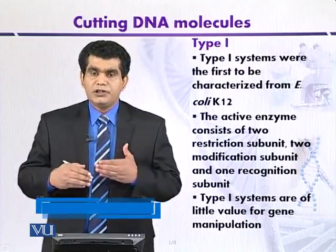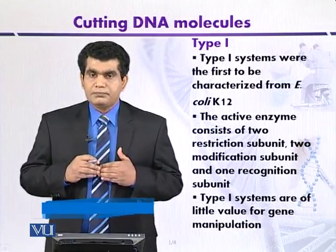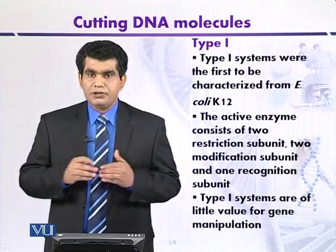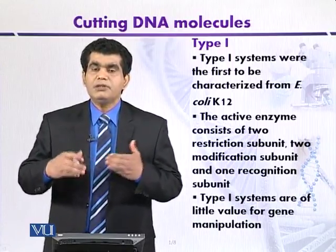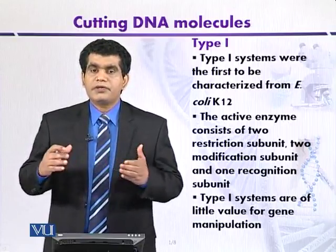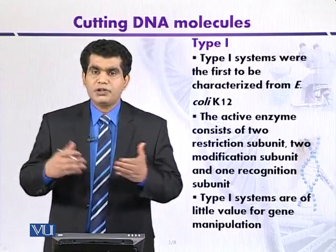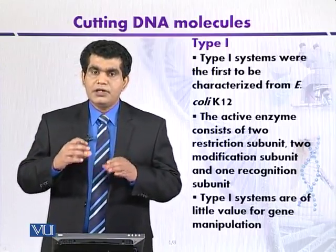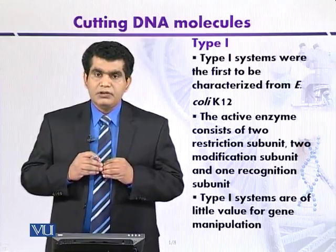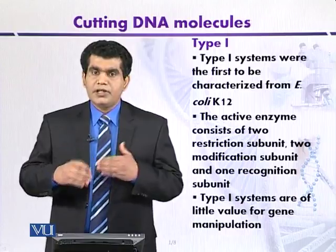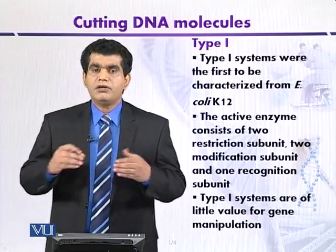Why? Because practically, it is not good. The reason is that type 1 restriction enzymes cleave the DNA randomly. If we analyze the structure of type 1 restriction enzyme, it is mainly a multi-protein complex composed of different types of subunits. The restriction subunit and methylation subunit belong to the same enzyme. It is composed of 5 subunits: 2 restriction subunits, 2 modification subunits, and 1 recognition subunit.